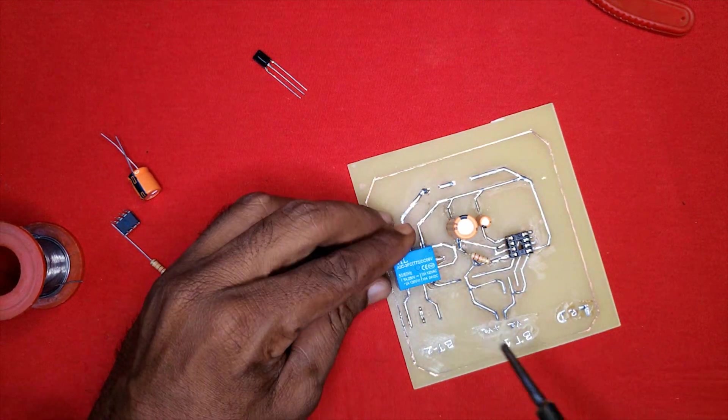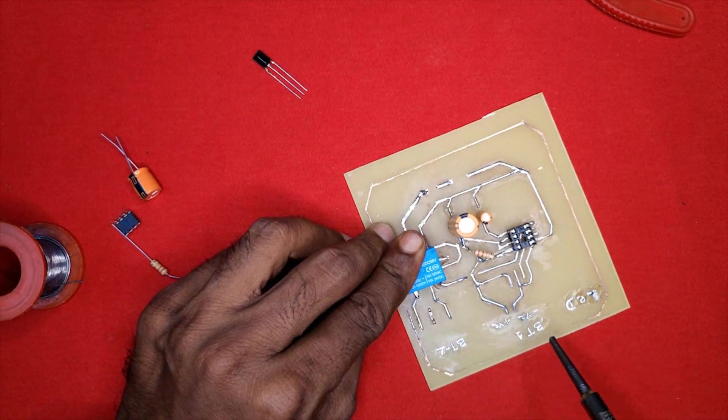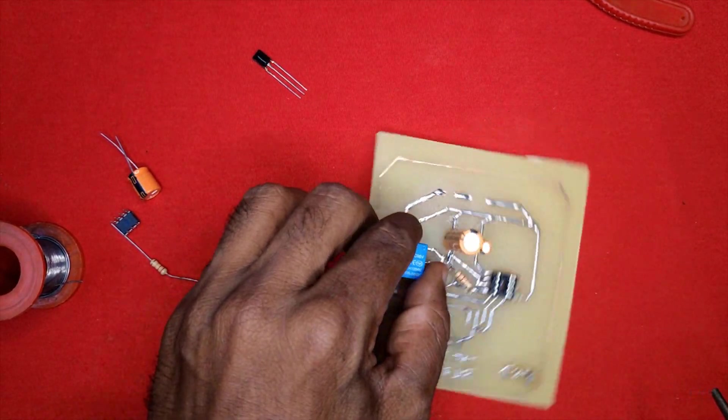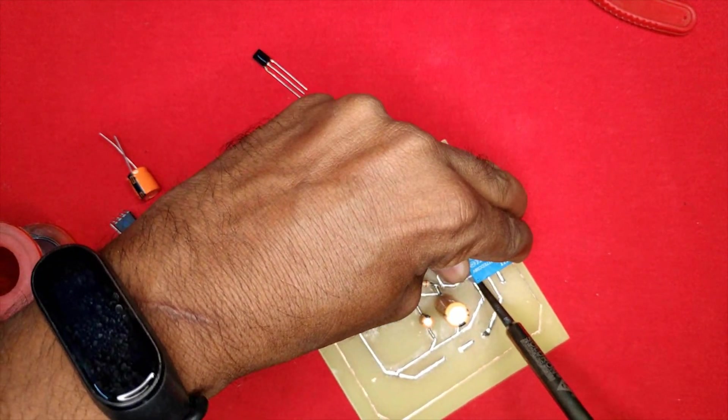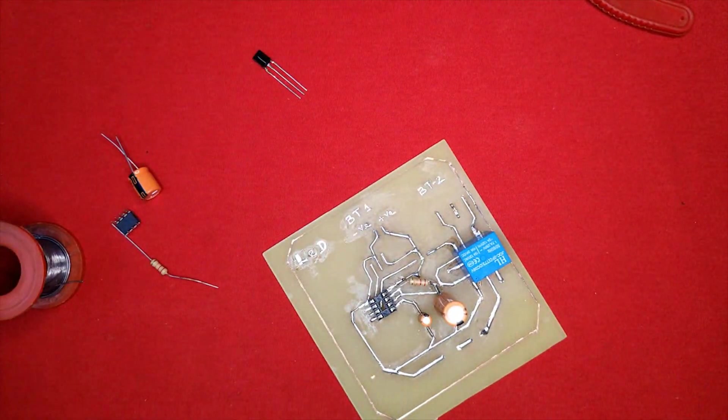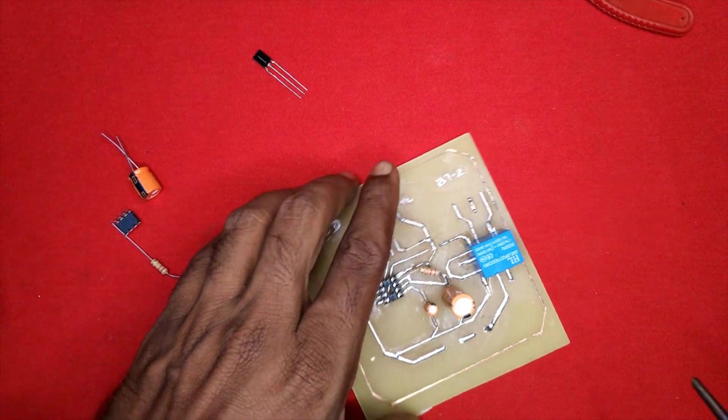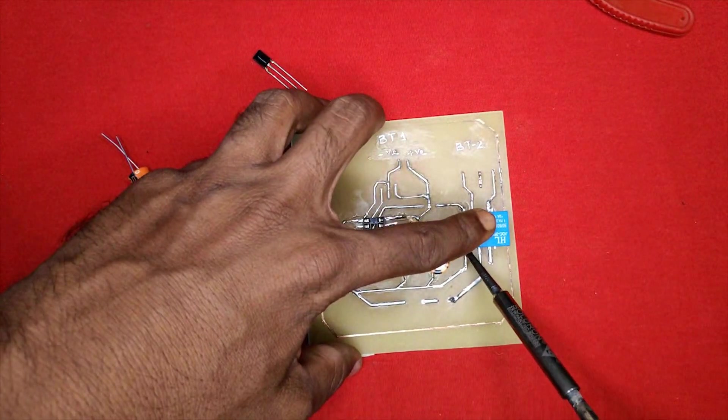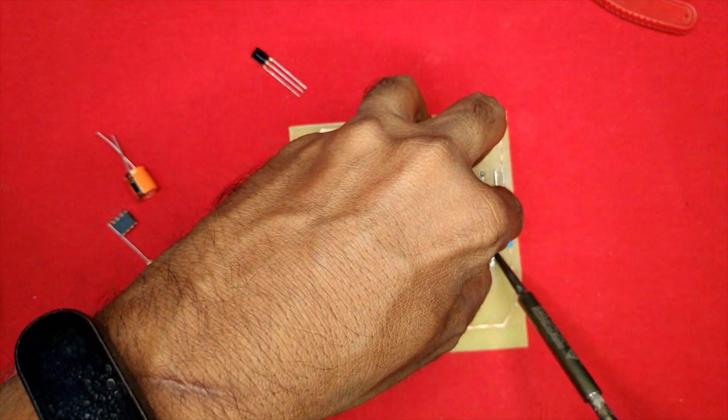6V Battery, NE555 Timer, IR receiver TSOP1738, 1K, 10K, 22K Resistors, 1uF 50V, 470uF 63V Capacitor, 6V Relay, a few turns of nichrome wire, and PCB.